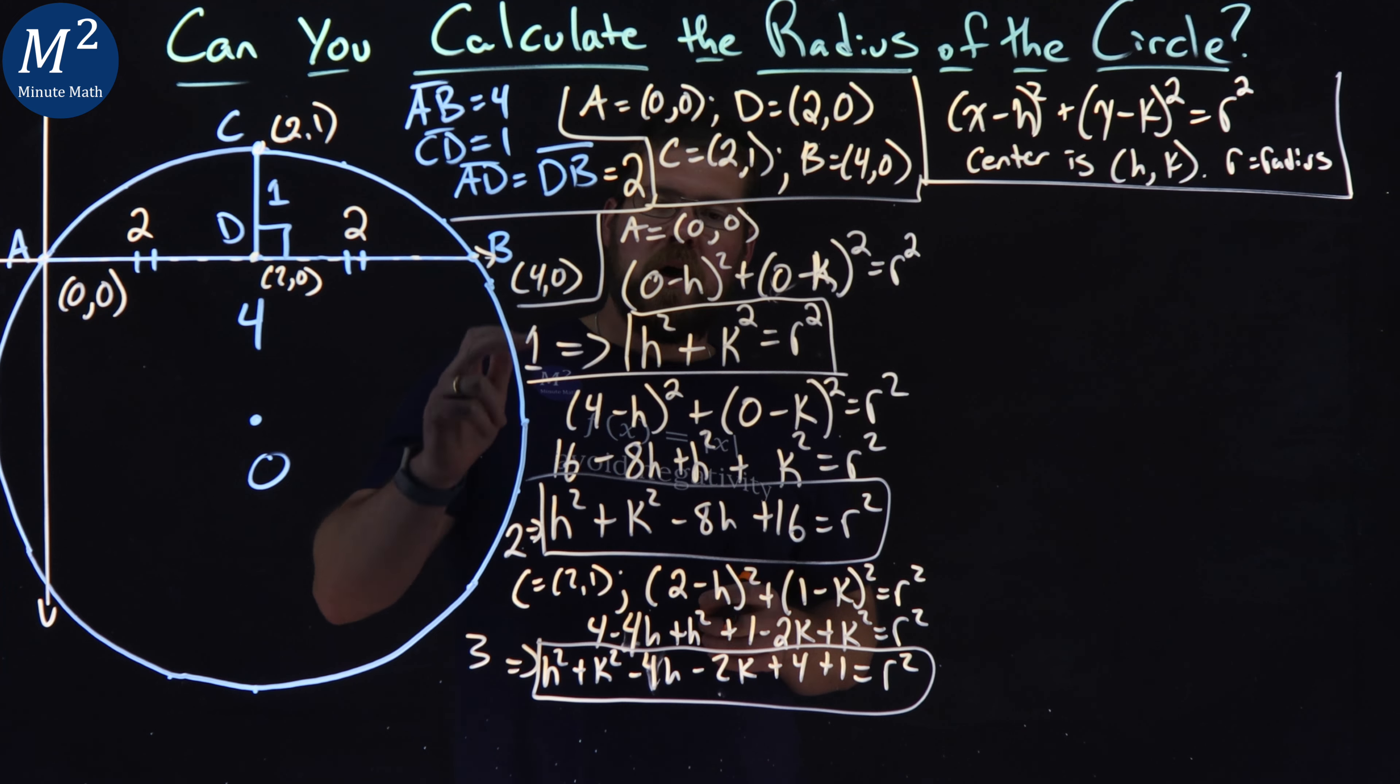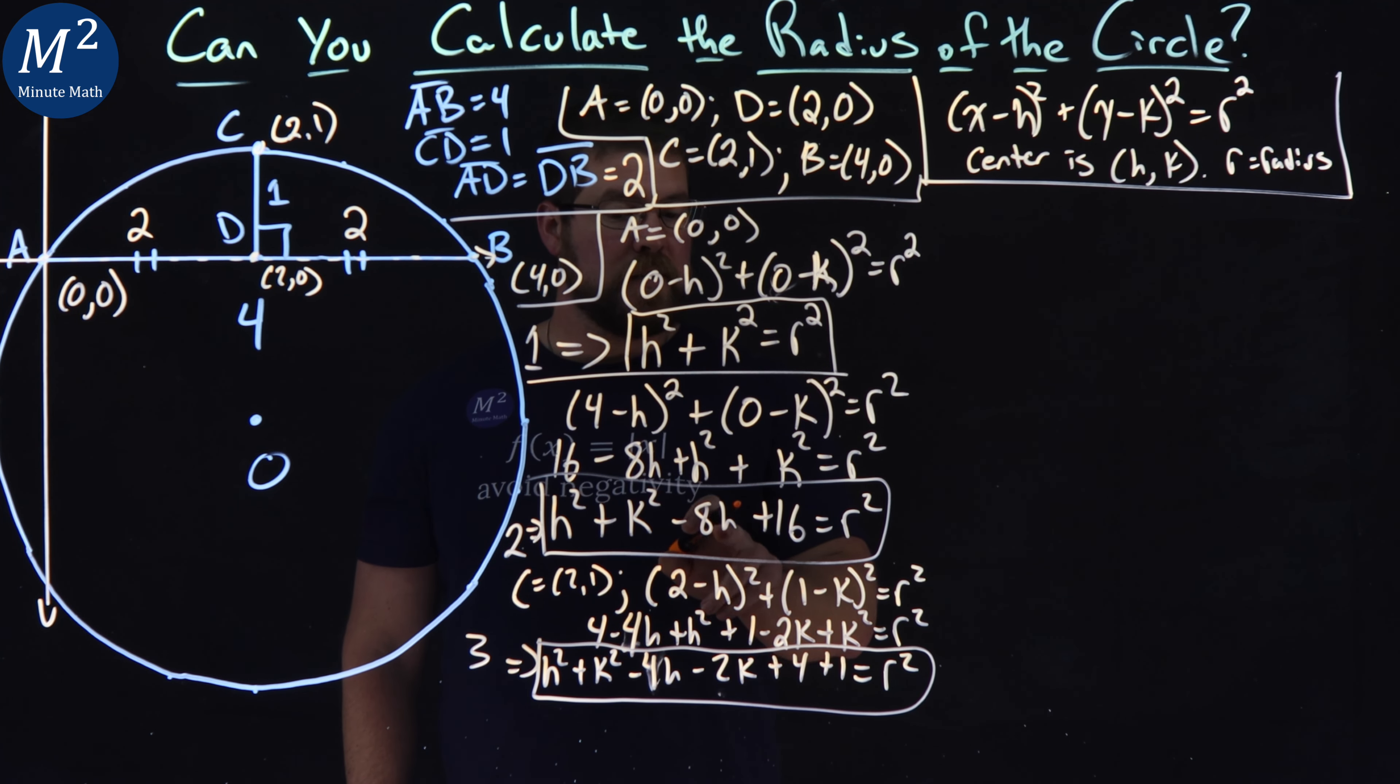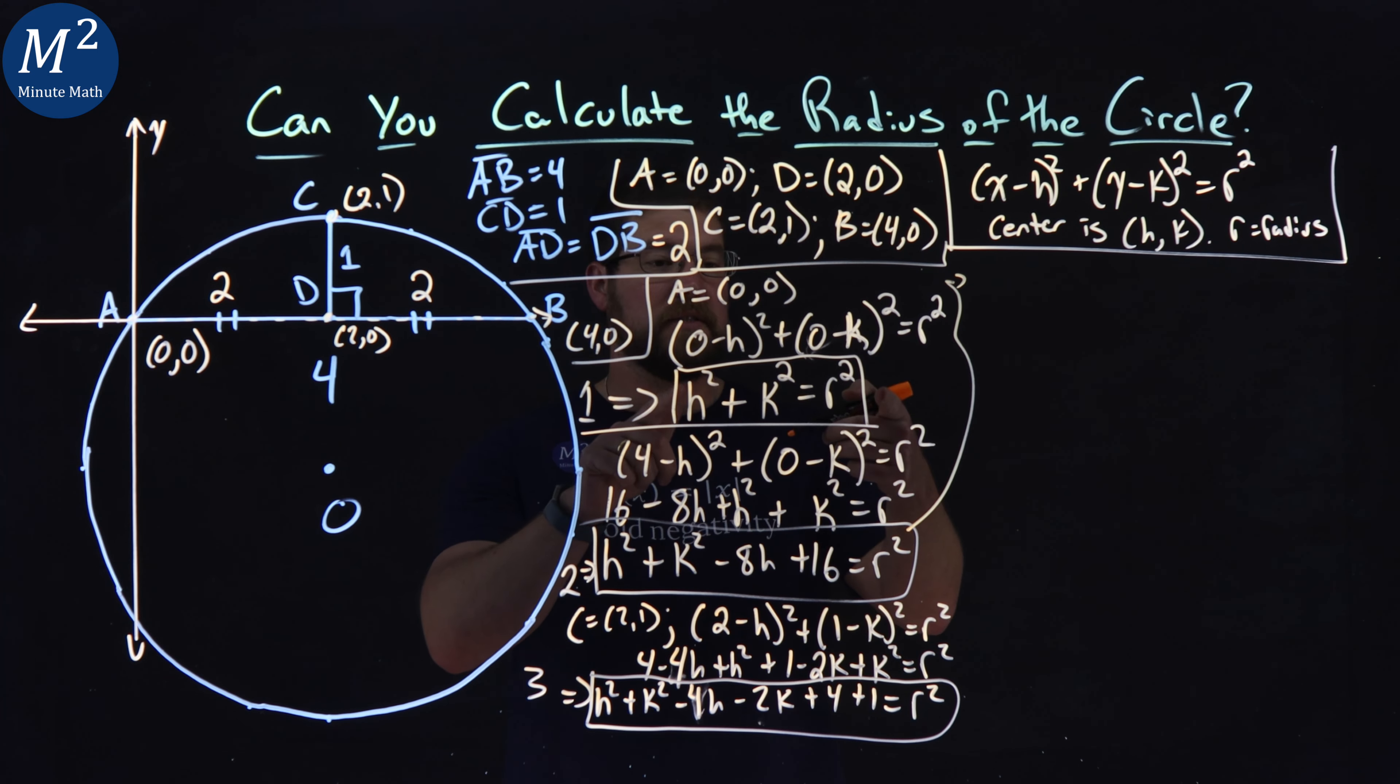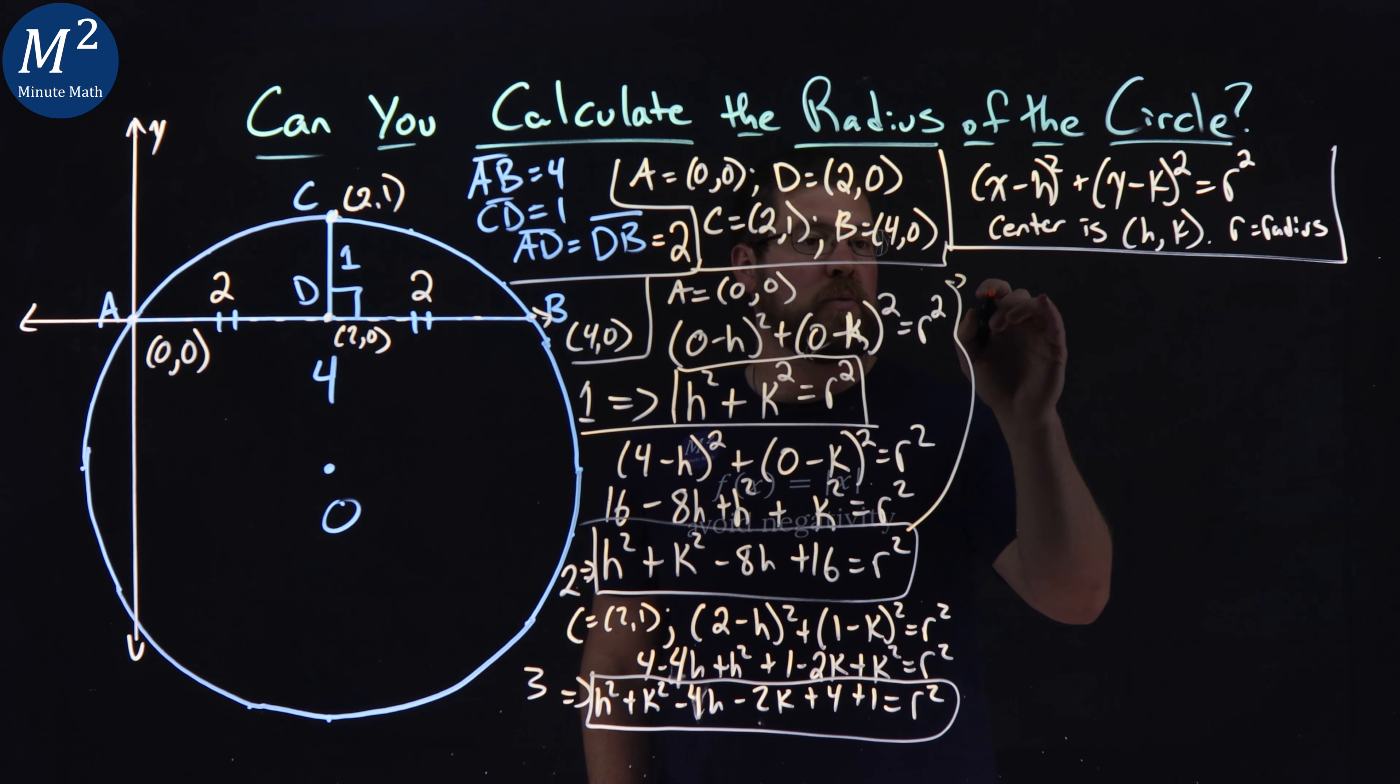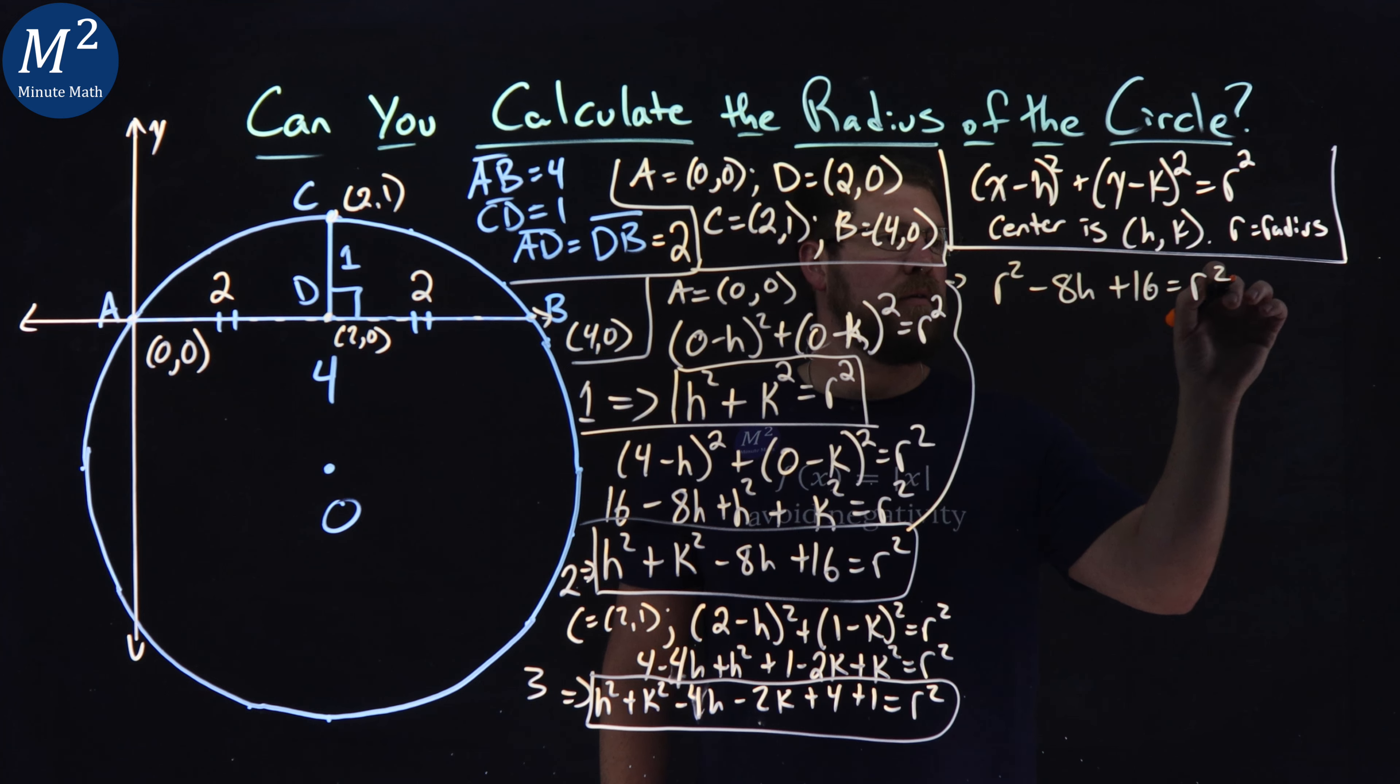But here's 4H. So we have 4H minus 2K minus 4H minus 2K then plus 4, plus 1 equals R squared. This is our third equation here. And that's a big doozy of equations. So we have all of our equations here.